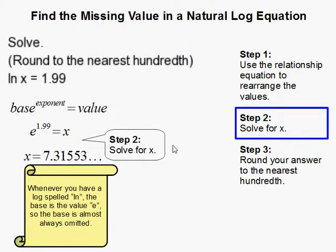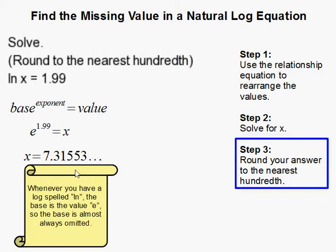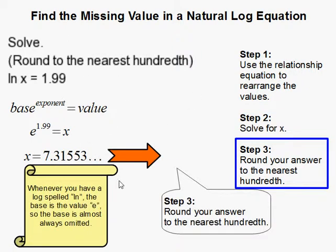But now in this problem, we're told to round to the nearest hundredth. So this becomes then, 7 and 32 hundredths, or 7.32. And that completes our problem.